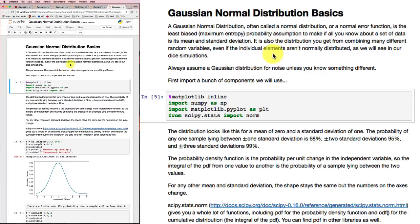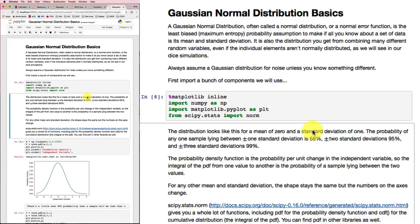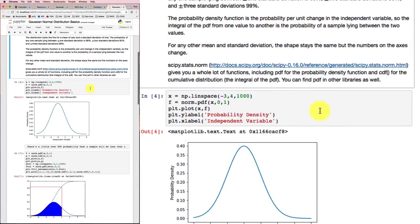So we're going to explore a little bit about Gaussian Normal Distributions. First thing we're going to do in this cell is import a bunch of stuff that we'll need in order to do our calculations. So running that, that makes sense. No interesting output.